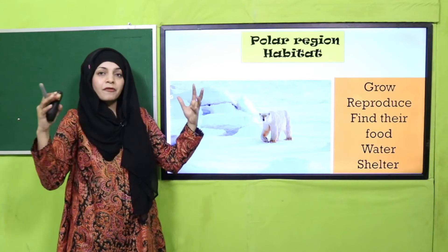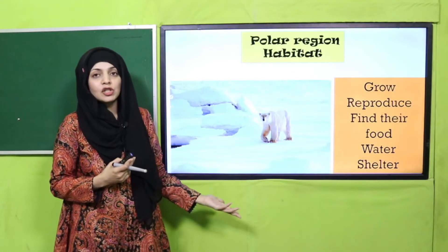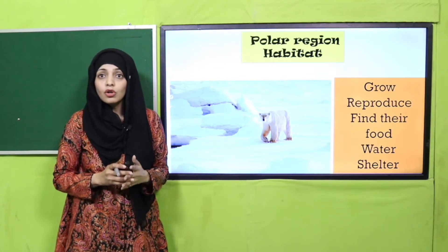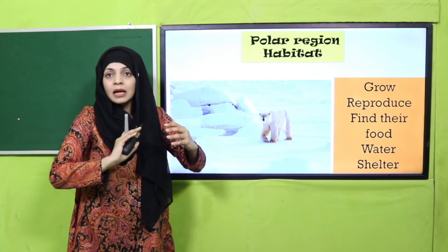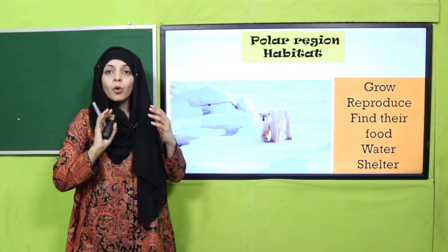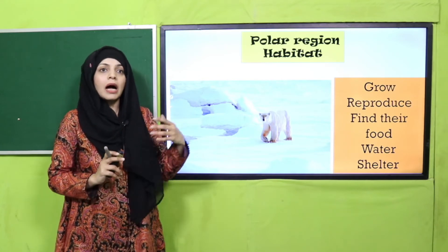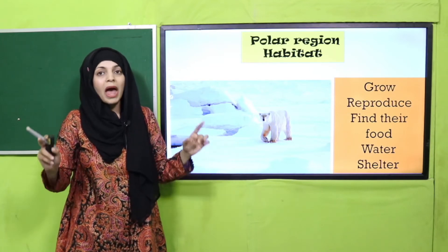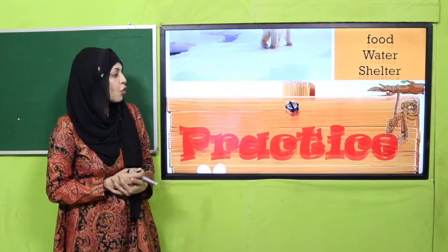Different animals live in different places because they can grow, reproduce, and find their food, water, and shelter there. If you send a camel to the polar region, can it survive? Obviously not — because the desert is the camel's habitat, not the polar region. And if you take a polar bear to the desert, can it survive? No. So a habitat is a place where a living thing is comfortable to live and survive.